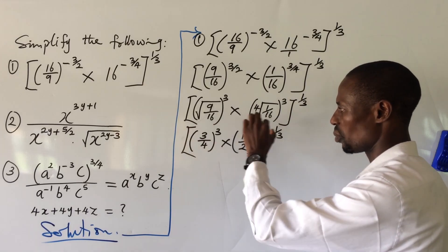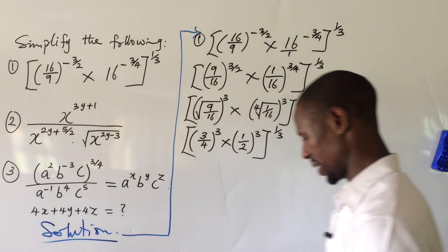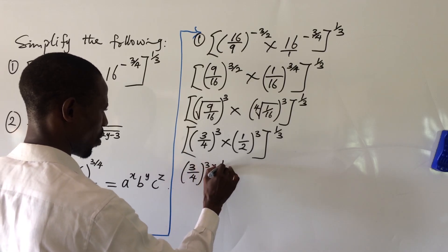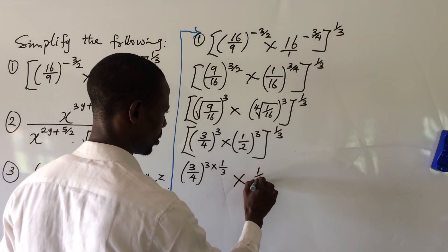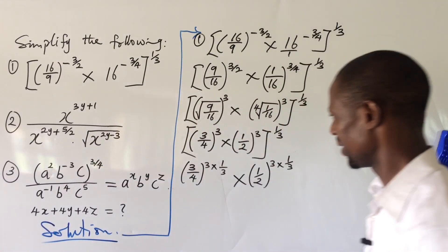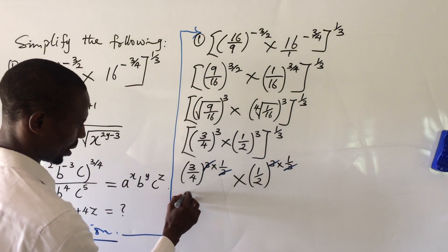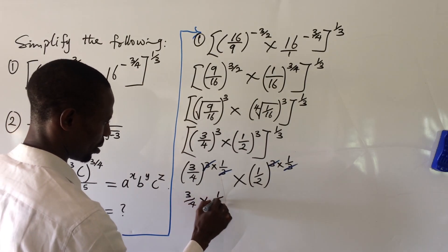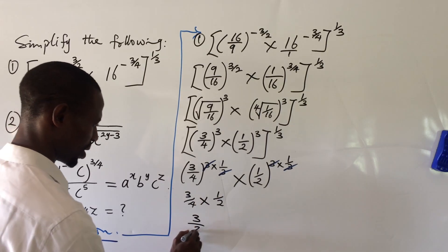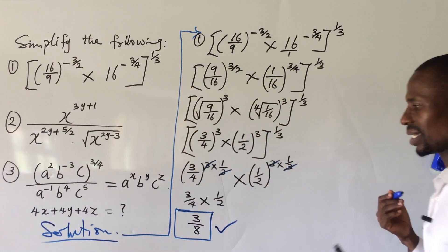From this point we use the outer power to multiply all powers inside the bracket — distributing it. So we have: 3 over 4 to the power of 3 times 1 over 3, times 1 over 2 to the power of 3 times 1 over 3. The 3s cancel, leaving us with 3 all over 4 times 1 all over 2. Three times 1 gives us 3, and 4 times 2 gives us 8. So the answer is 3 over 8.